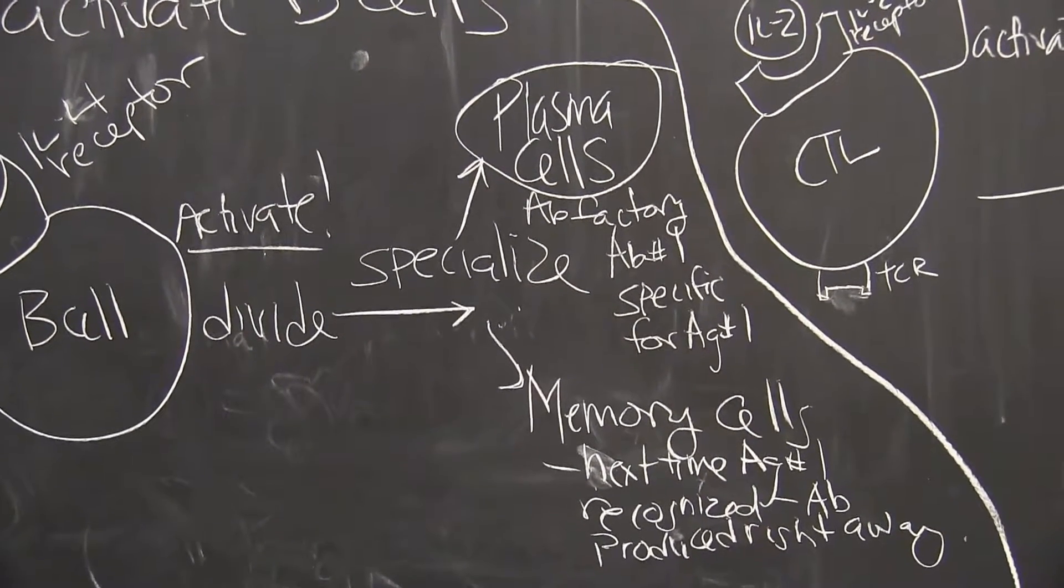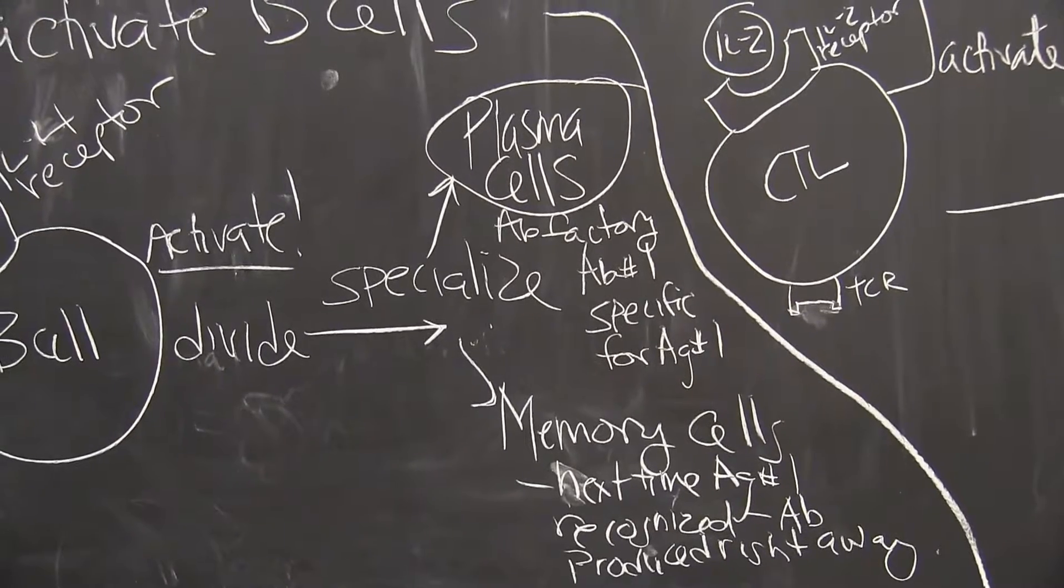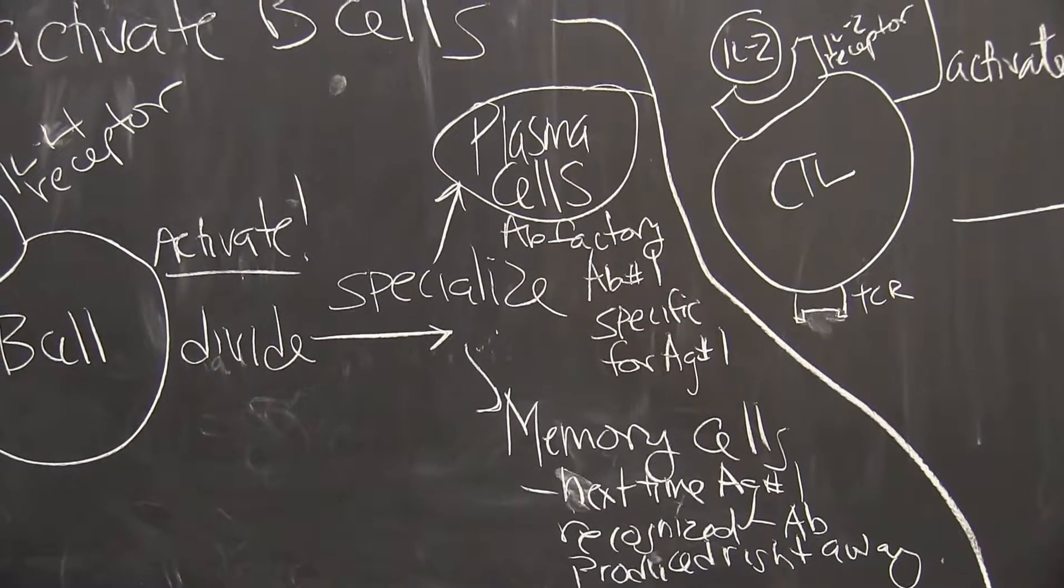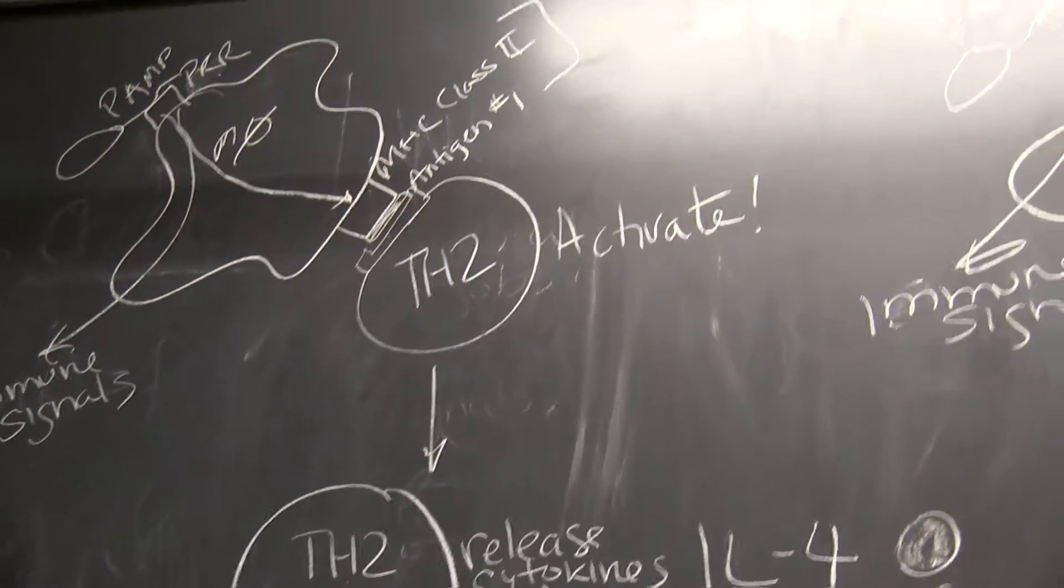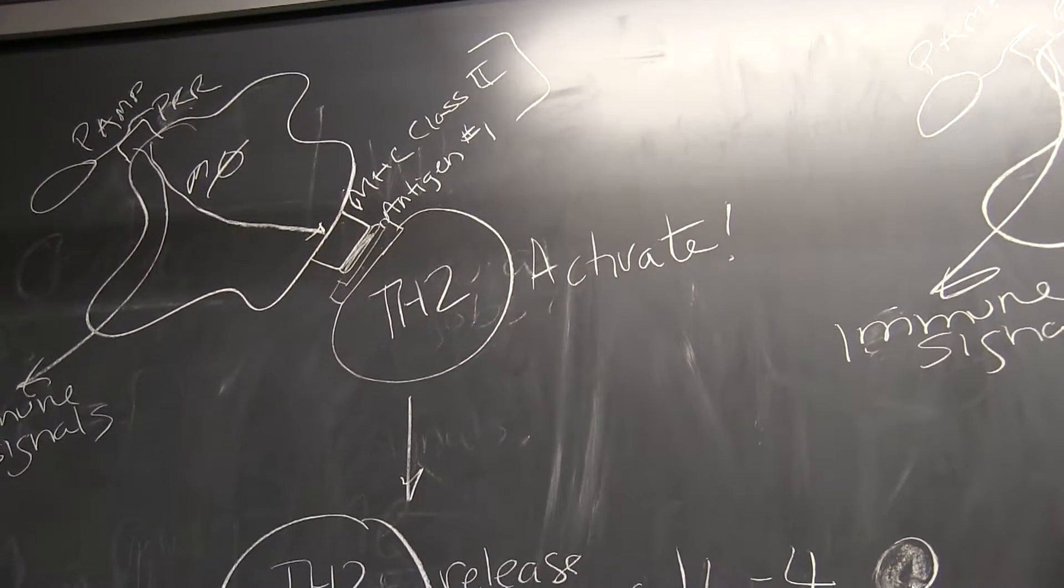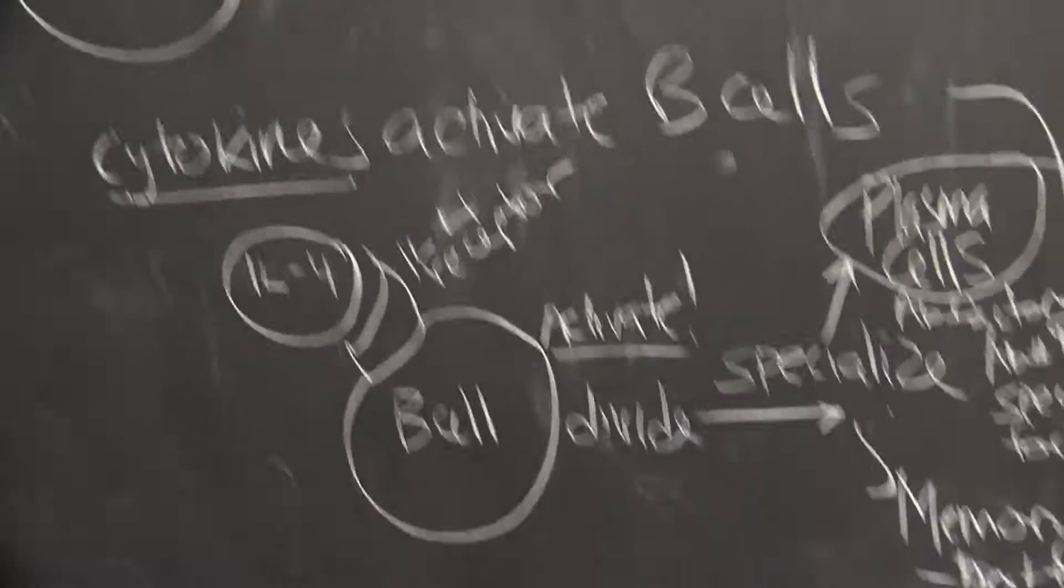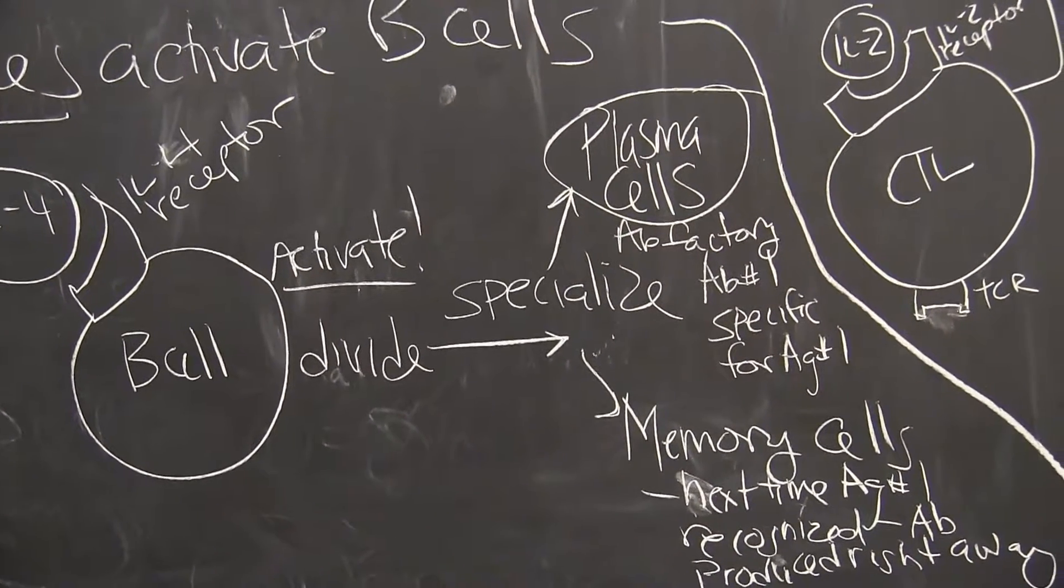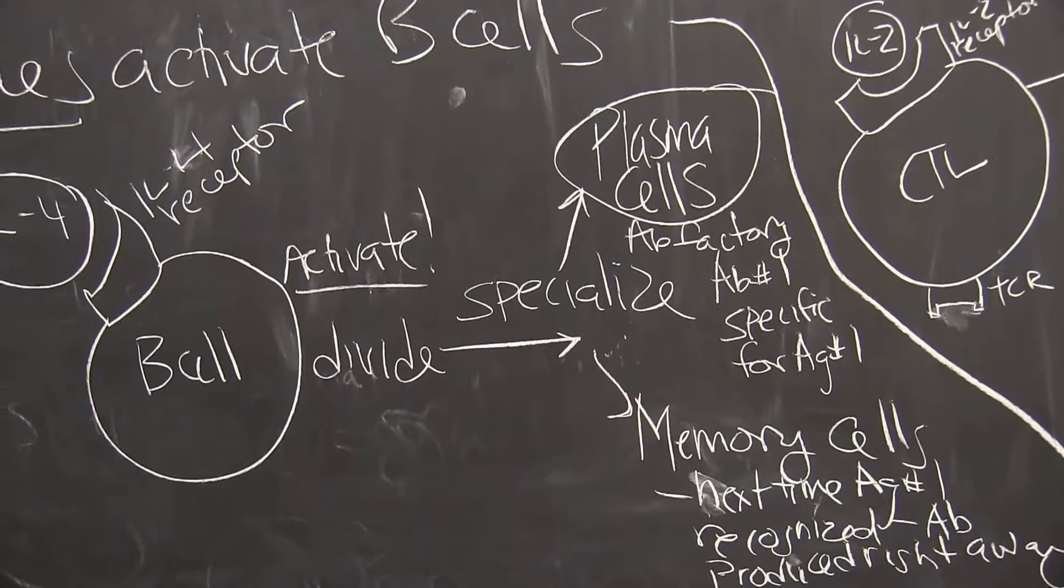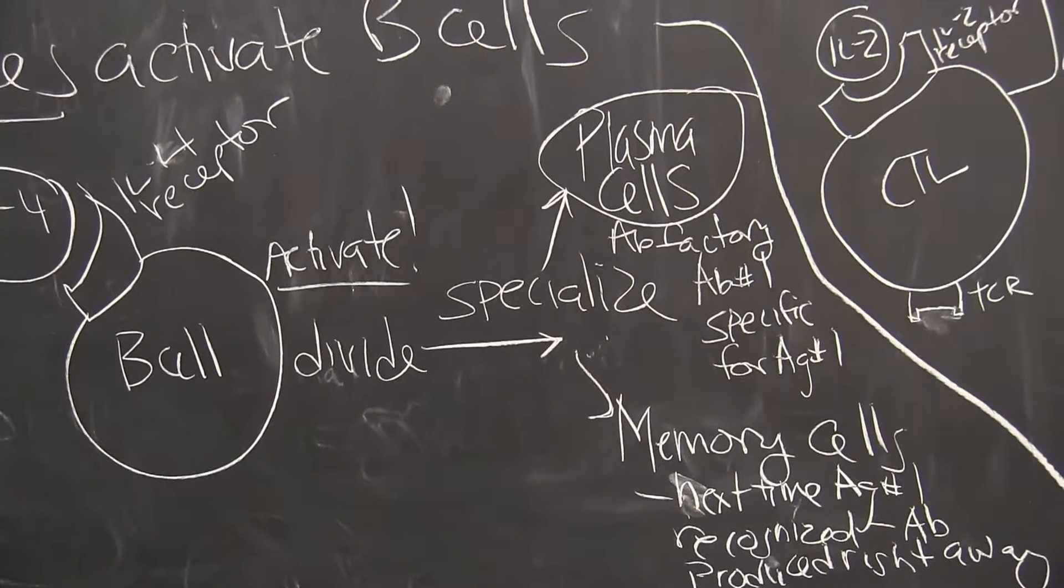Remember that the antibody that it will make will be specific for antigen number one. So the same antigen that was up here that activated our helper T cell will also be what this antibody is made against. It's an antibody factory against antigen number one.